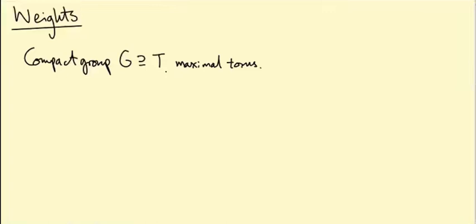Here's a bit more notation that's going to be useful in what follows. Let little t be the Lie algebra of the maximal torus. What is little t in examples?